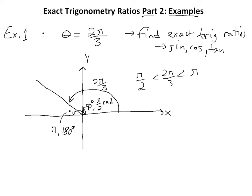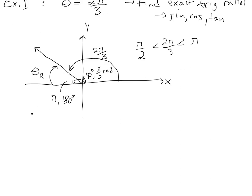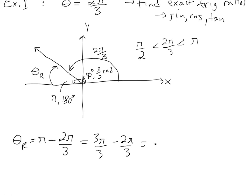If you see my other video, you have to look at the reference angles. So this one, we're going to look at the reference angle — we'll call it theta r. The reference angle is going to be pi minus this angle. So: theta r equals pi minus 2 pi over 3. Pi equals 3 pi over 3, so 3 pi over 3 minus 2 pi over 3 equals pi over 3.